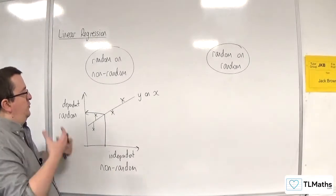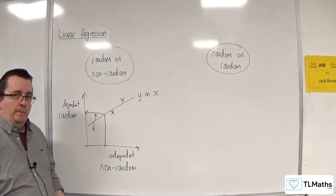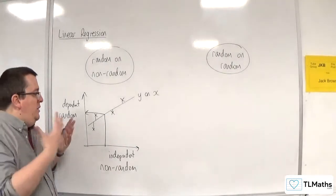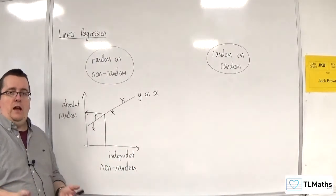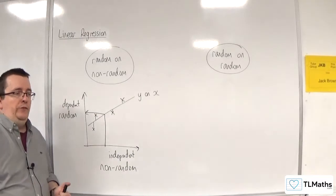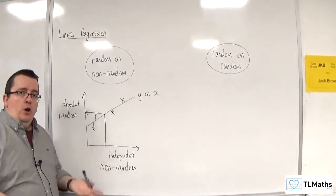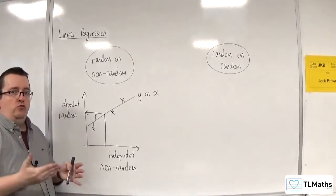It makes sense to predict a random variable from a non-random variable. It does not make sense to predict a non-random variable using a random variable. So when you have random on non-random, you can only find the y on x regression line.